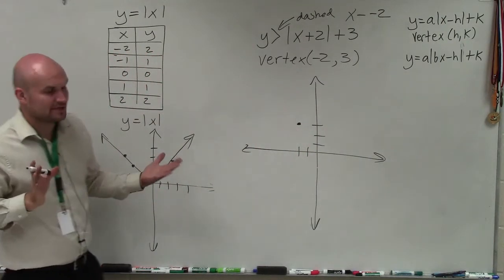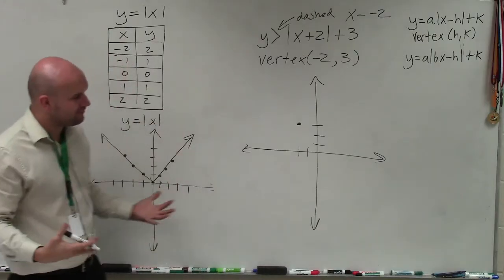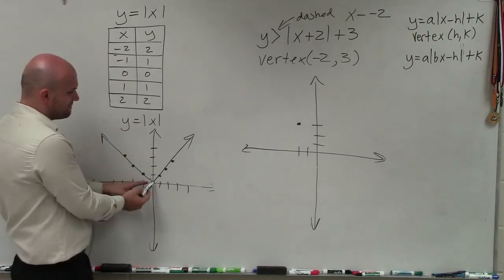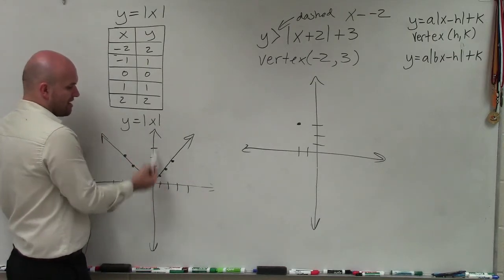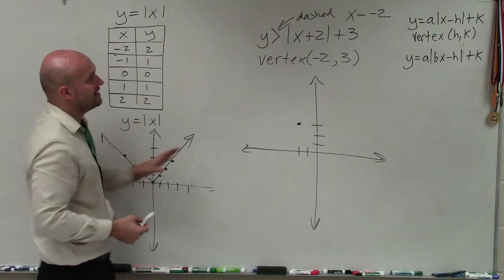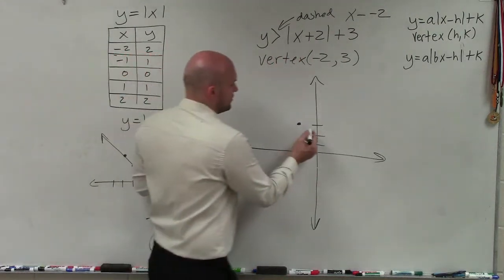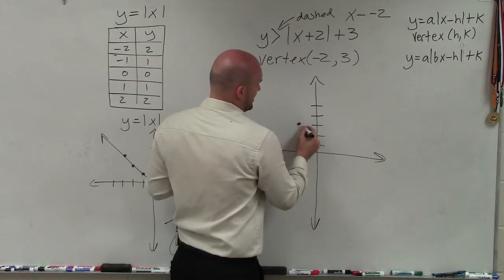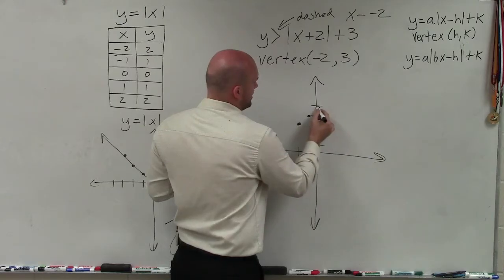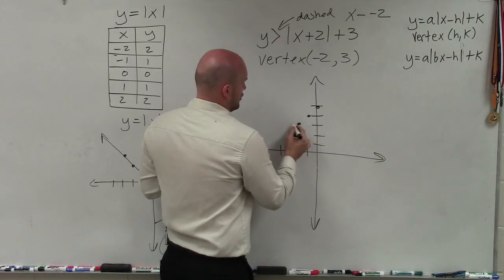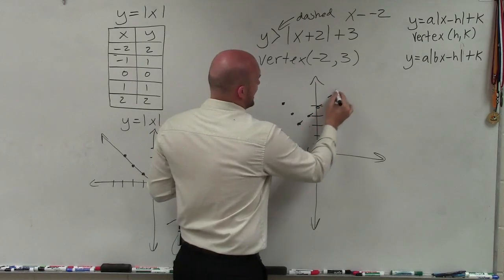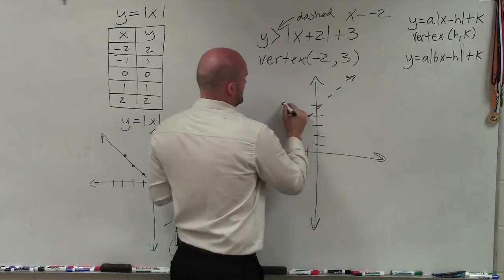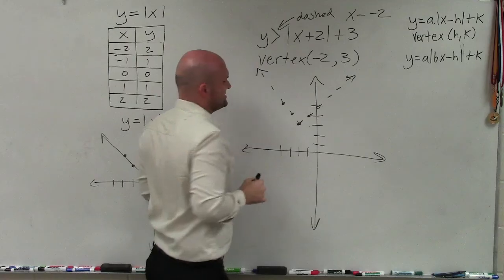Besides that, my graph is not being stretched or compressed at all or being reflected. Therefore, it's going to form the same pattern as the parent graph of the absolute value equation, which is over 1 up 1, over 2 up 2. And again, remember, it's dashed. So when I go over 1 up 1, over 2 up 2, over 1 up 1, over 2 up 2, these are all dashed lines.